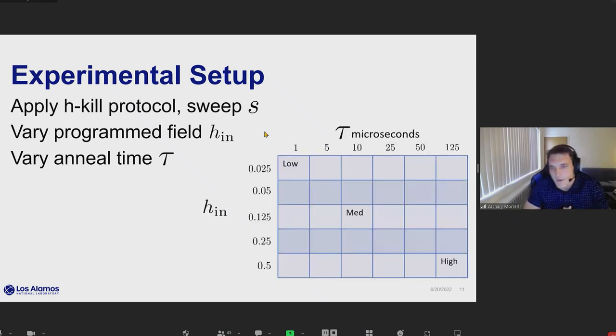When I say that we did simulations at low values of tau, or low values of H-n, or medium to high, this is what I mean by that. In this case, the annealing time is in terms of microseconds.